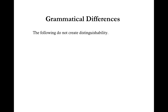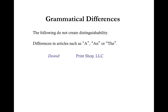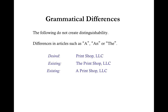Differences in articles such as a, an, or the also do not create distinguishability. For example, if your desired LLC name is Print Shop LLC, but during the search you found The Print Shop LLC or A Print Shop LLC, these names are all the same in the eyes of the state, and therefore your desired LLC name would not be available for use. An alternative name would be Printing Solutions LLC.